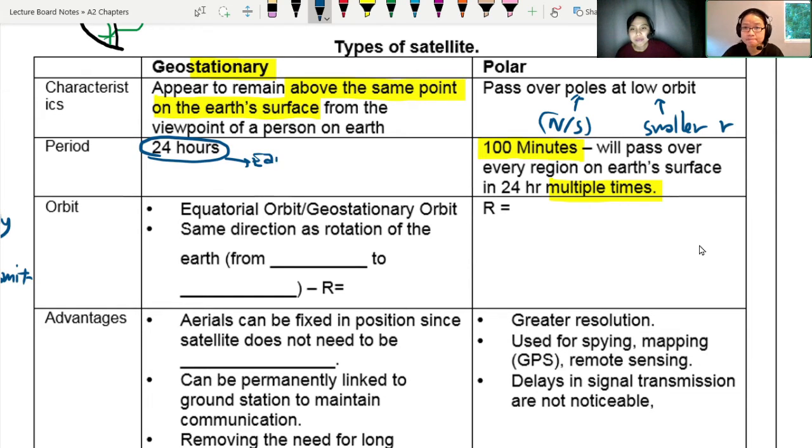Let's talk about the orbit or the distance from the surface. Because we are following the earth, it has to be traveling on the equatorial orbit along the equator. And it must have the same direction as the rotation of the earth, which is from west to east. You can see the satellite moving from west to east. And the radius is about 3.6 times 10 to the power of 4 km for the geostationary satellite. Pretty far away.